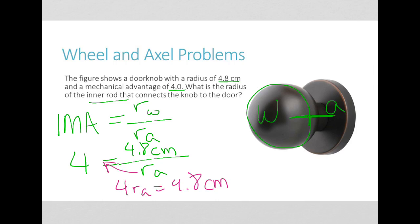And if I divide both sides by 4, I get RA. The radius of my axle is going to be 4.8 divided by 4, which equals 1.2, and that would be in the same units of centimeters.